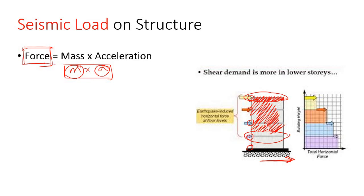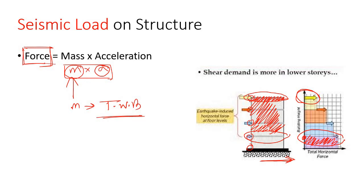As a result, at the roof level the lateral load due to seismic force is least, but at the base level or ground level it is maximum, because at that point the mass is the total weight of the whole building. In this way you can calculate the seismic load applied at different points of your structure, and to find the acceleration you can refer to your regional code.